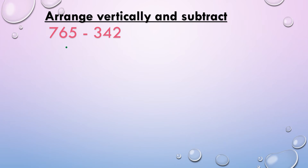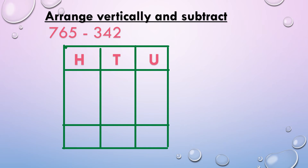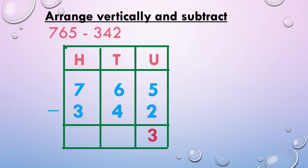Now, 765 minus 342. We draw the columns and write the place values: hundreds, tens, and units. We arrange the numbers in the columns: 765 minus 342. We write the minus sign. Units: 5 minus 2, we get 3. Tens: 6 minus 4, we get 2.